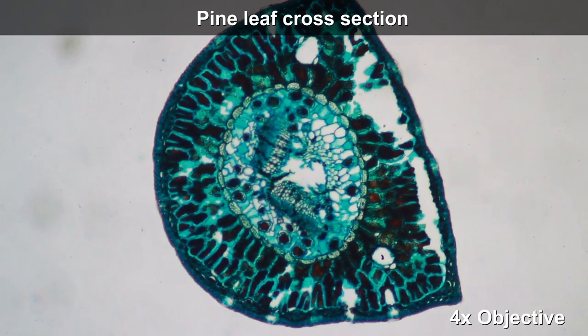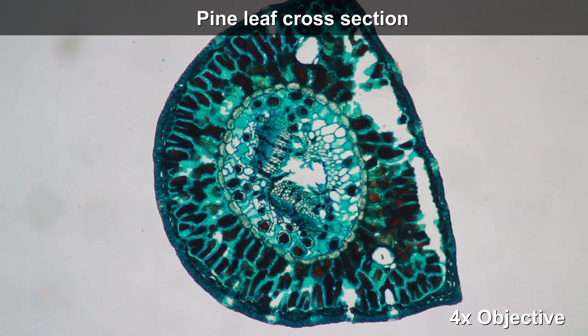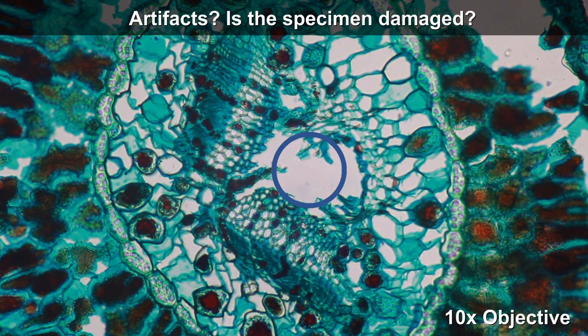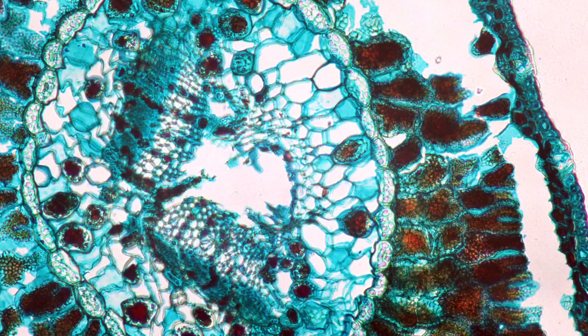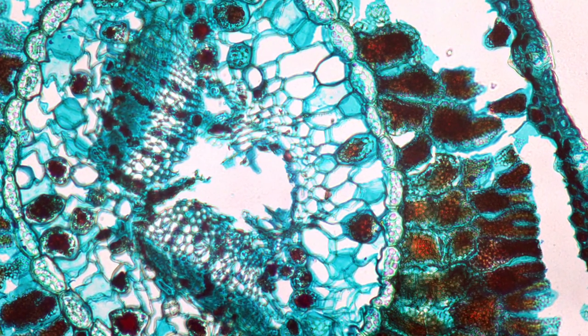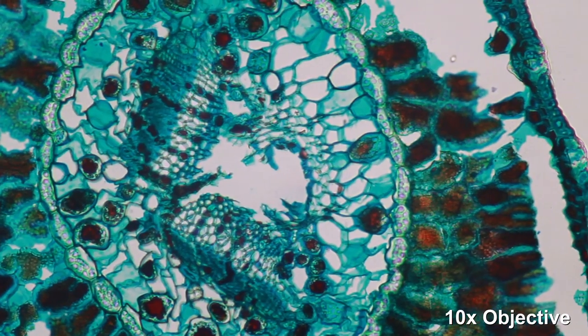This is the cross section of the pine leaf. Lucky that at the lowest magnification we can see the full specimen here. I saw that the center had a little gap there, and I think that this could indeed be an artifact—the specimen is a little bit damaged. It doesn't matter so much; it looks nice in any case.